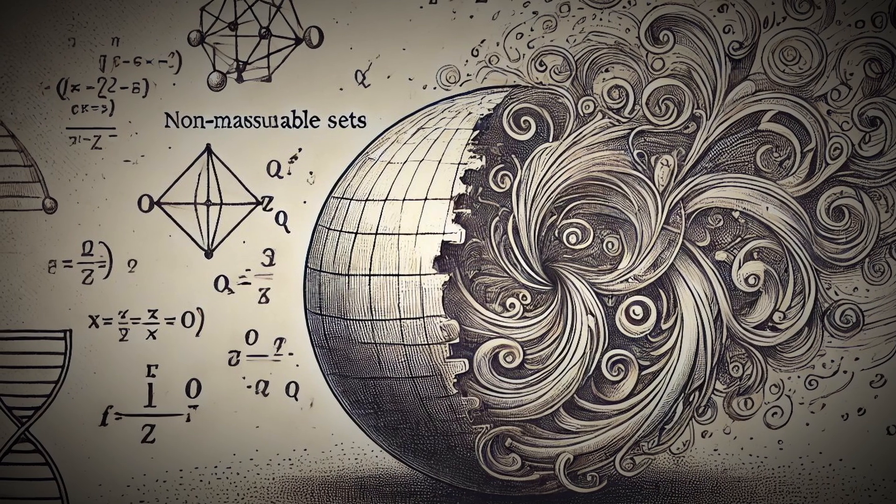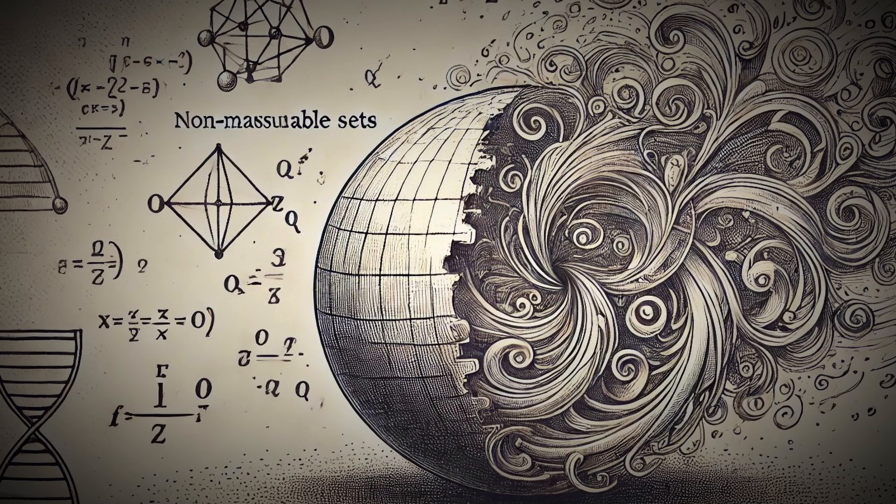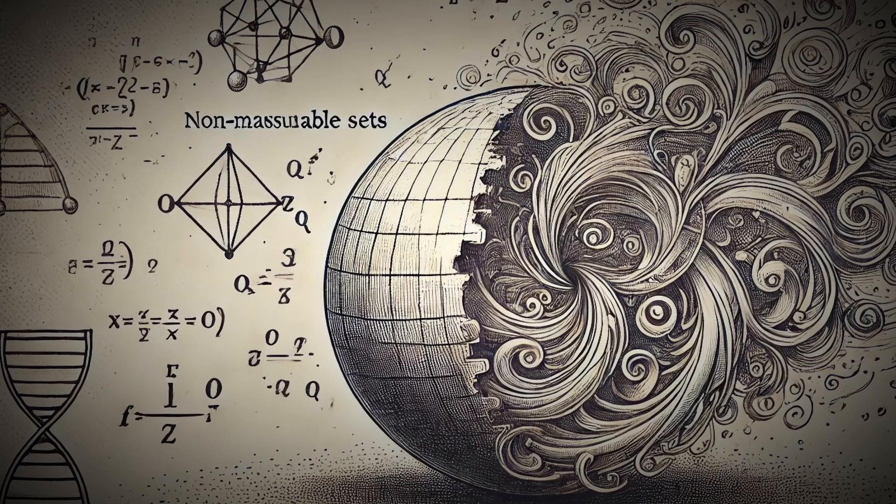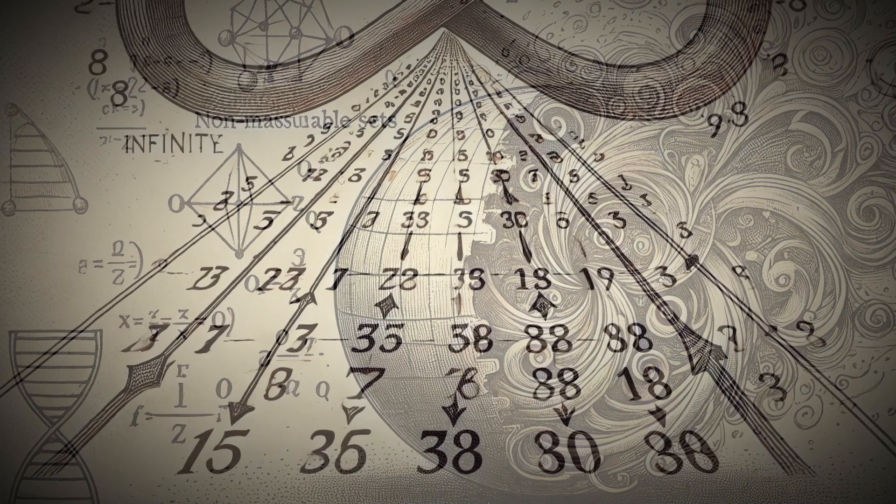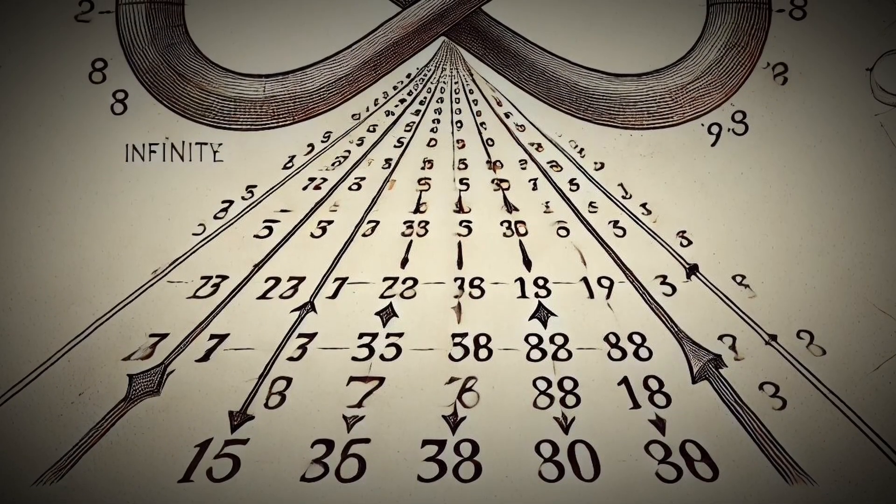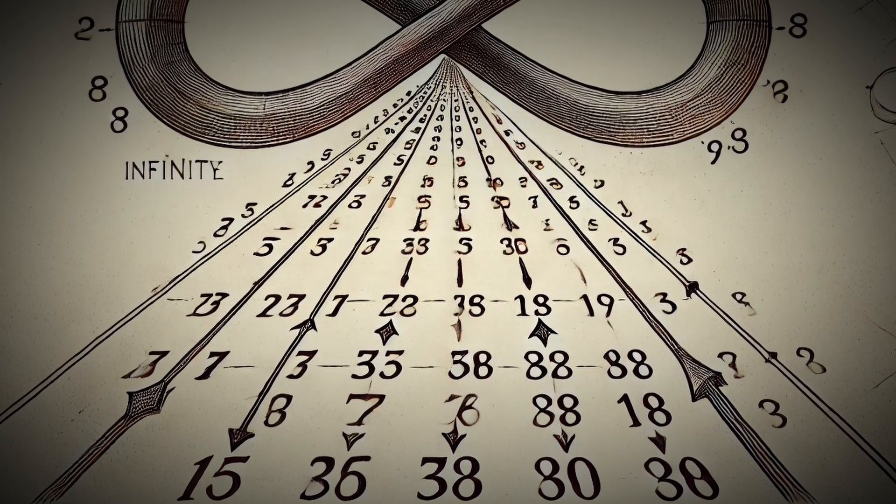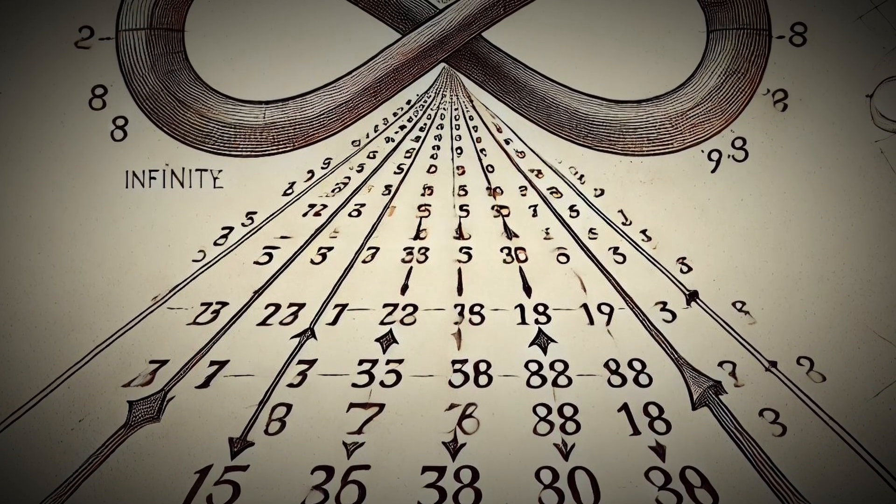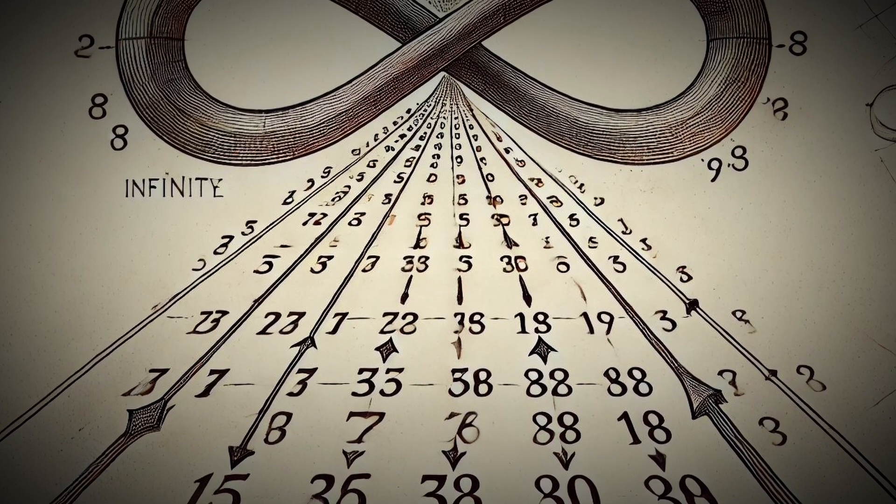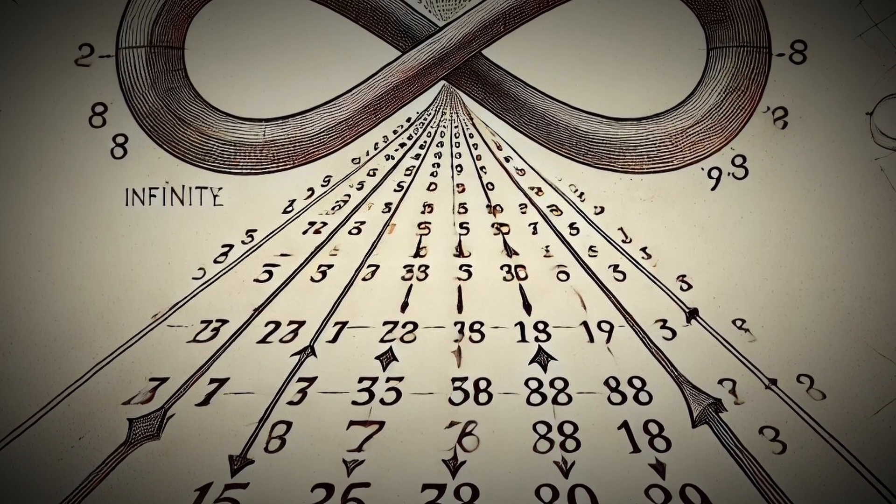What's mathematically possible doesn't always align with what's physically possible. The Banach-Tarski paradox relies heavily on two major mathematical concepts: infinity and the axiom of choice. Infinity allows us to manipulate objects in ways that defy physical laws.